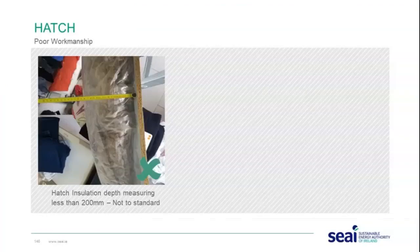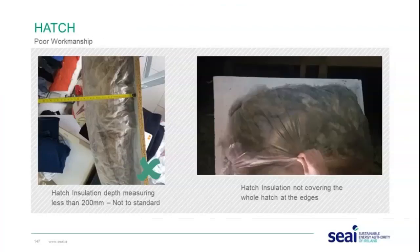Poor workmanship examples on hatches include insulation depth measuring less than 200 millimetres, which does not meet standards, and hatch insulation not covering the whole of the hatch — the insulation should cover the entire hatch area including the edges.